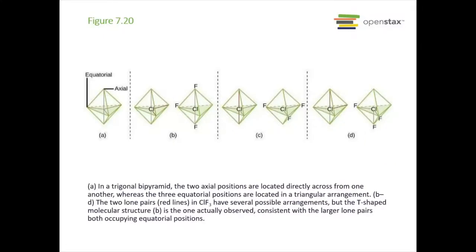This diagram shows the trigonal bipyramidal structure, illustrating where equatorial versus axial positions are. Equatorial atoms are on the triangle in the plane, and axial atoms are on the top and bottom. For chlorine trifluoride, different arrangements are possible, but the T-shaped structure is observed because those lone pairs prefer the equatorial position where they have larger molecular angles and more room.